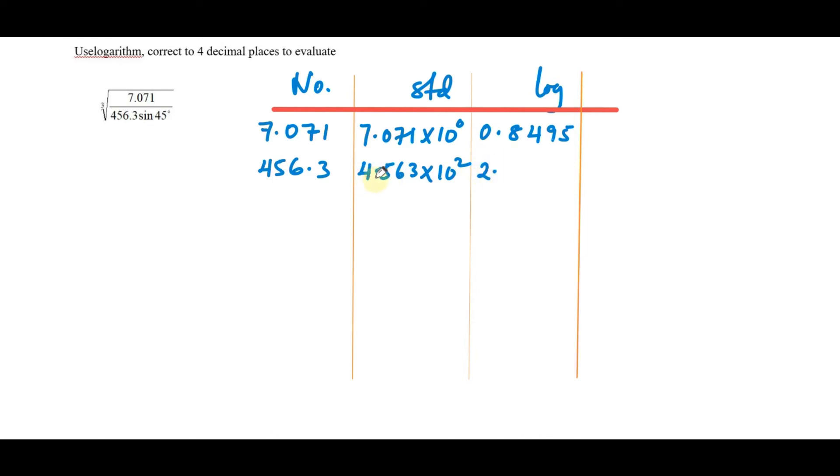The number is being multiplied by sine of 45 degrees. So for sine of 45 degrees, you'll go directly to the logs of sine. From the tables of logs of sine or calculator, read the logarithm of sine of 45.